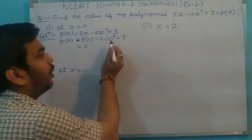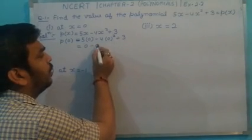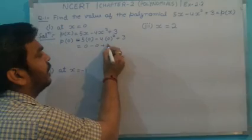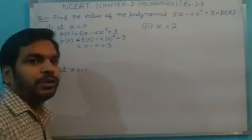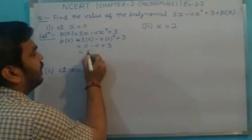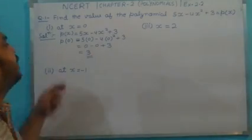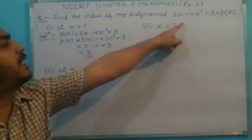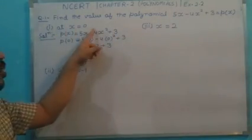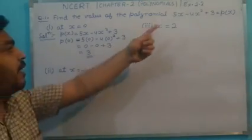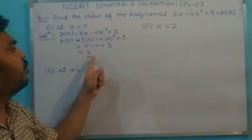0 - 0 + 3. The value of 0 is nil, so the final answer is 3. You can see here that the value of this function at point x = 0, when we put x = 0 in this function, the value is 3.